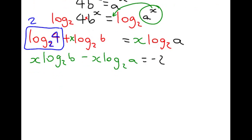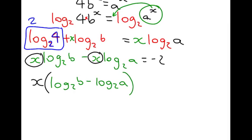Now, the clever thing that we have to do here is to get x on its own by factorising. So, we factorise out the x and we get x log to base 2 of B take away log to base 2 of A equals minus 2.